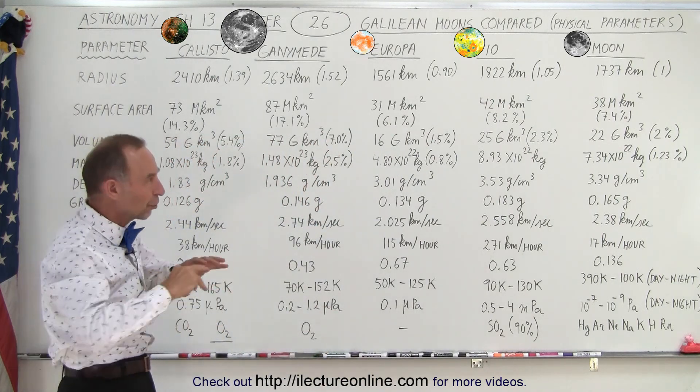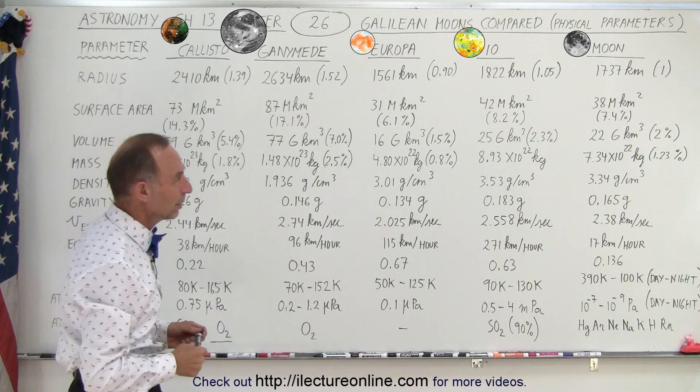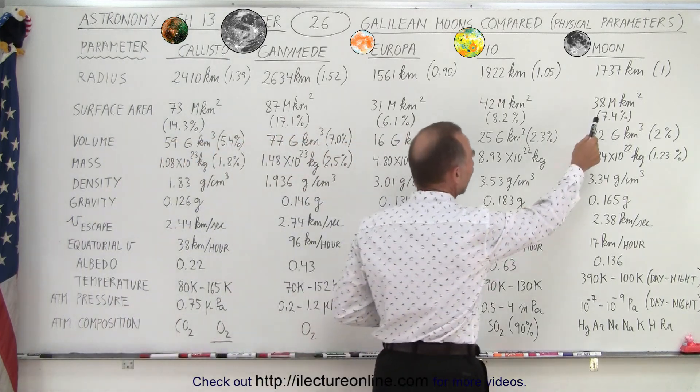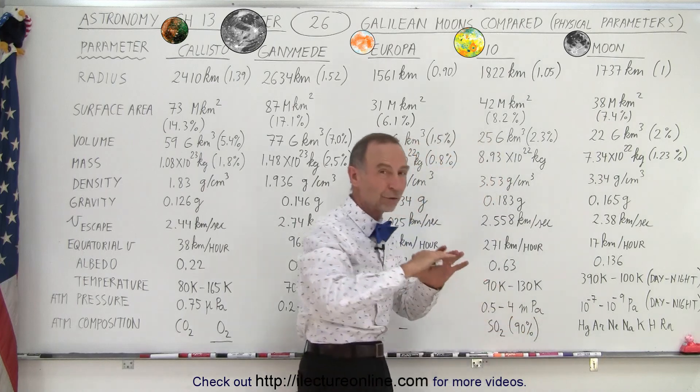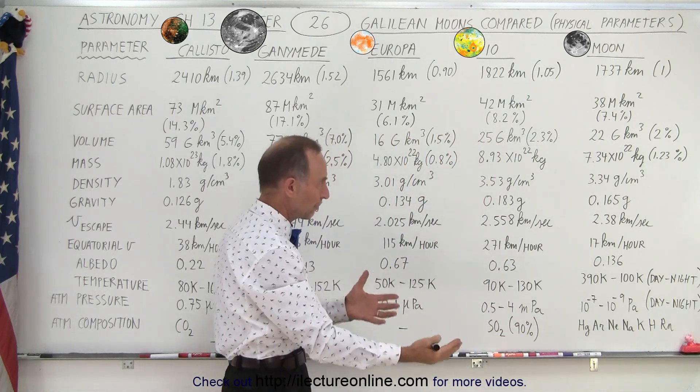So how big are they as far as surface area is concerned? Well, the moon is about 38 million square kilometers which is 7.4% the surface area of the Earth. So now we're going to compare it to the Earth.